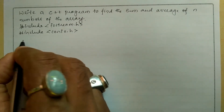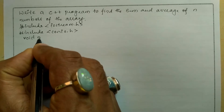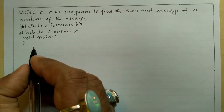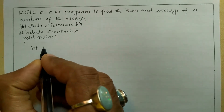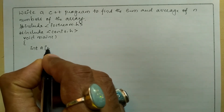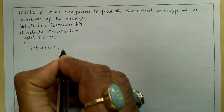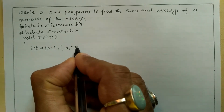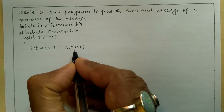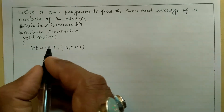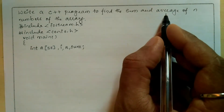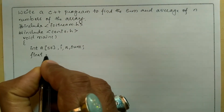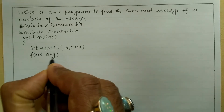Now I am going to write void main function, curly open brace. In the declaration section I am going to declare the array of type integer — a of 50 — comma i is used for index, n is number of elements, and sum is a variable which is used to find out the sum. Next, I want to calculate average, so I am going to declare a float type variable called avg.